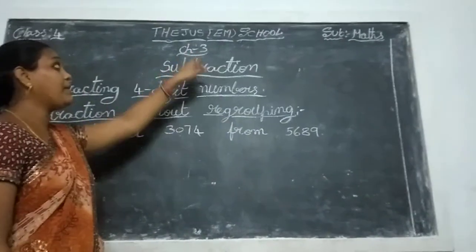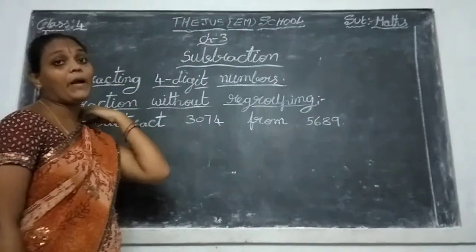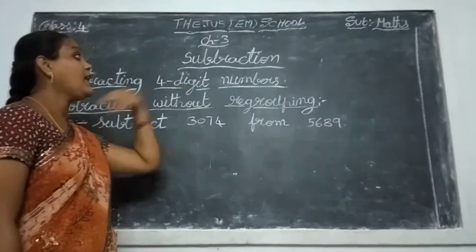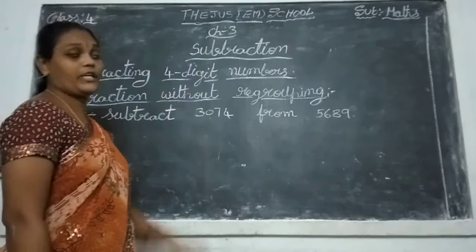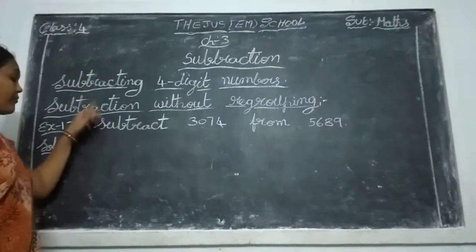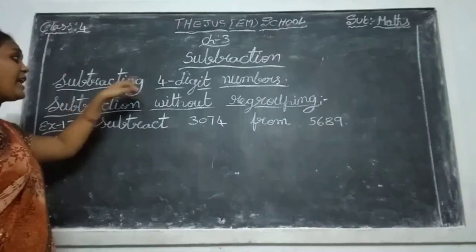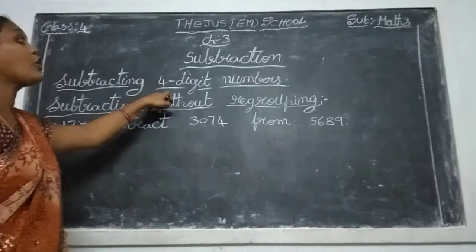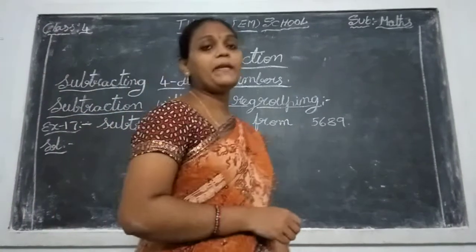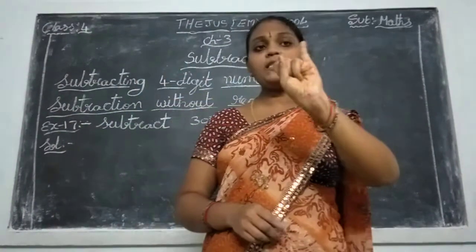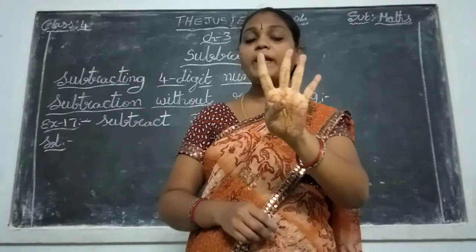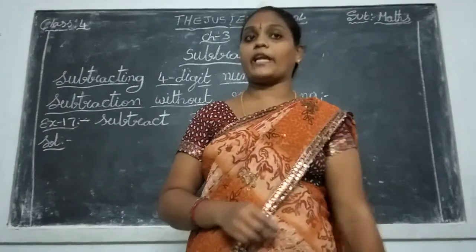See here, in chapter number 3, the chapter will be completed. Now, we expect subtraction. Subtraction — subtracting four-digit numbers. Four-digit numbers means ones, tens, hundreds, thousands. Thousand numbers will be subtracted.